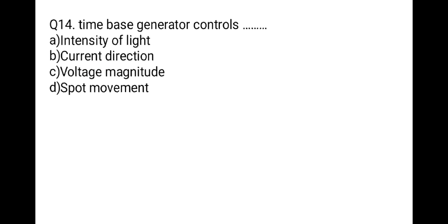The next question: time-based generator controls which of the following? Options: intensity of light, current direction, voltage magnitude, or spot movement. In a CRO, the movement of the spot depends on the time-per-division knob, so the correct option is D: spot movement. This spot movement is controlled by the time-based generator.